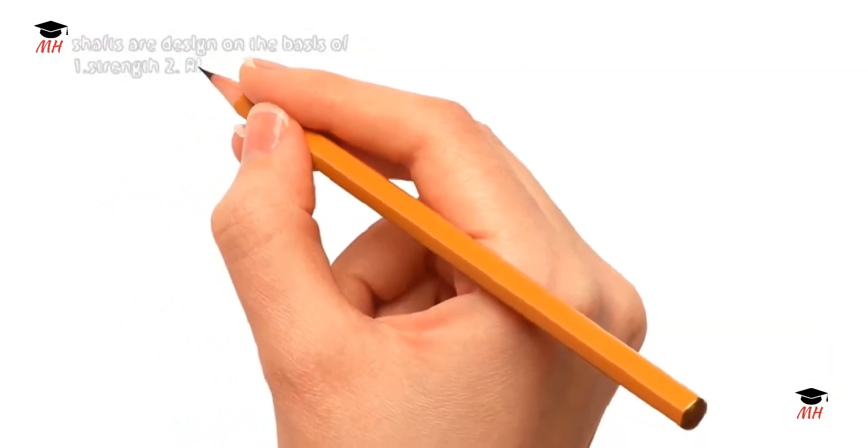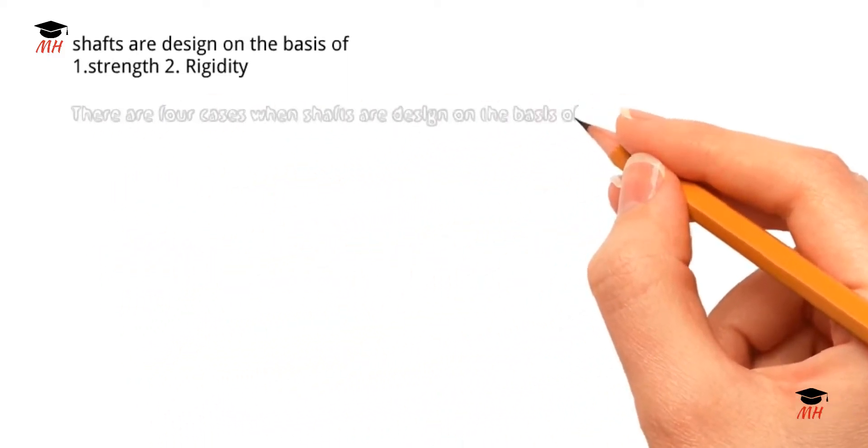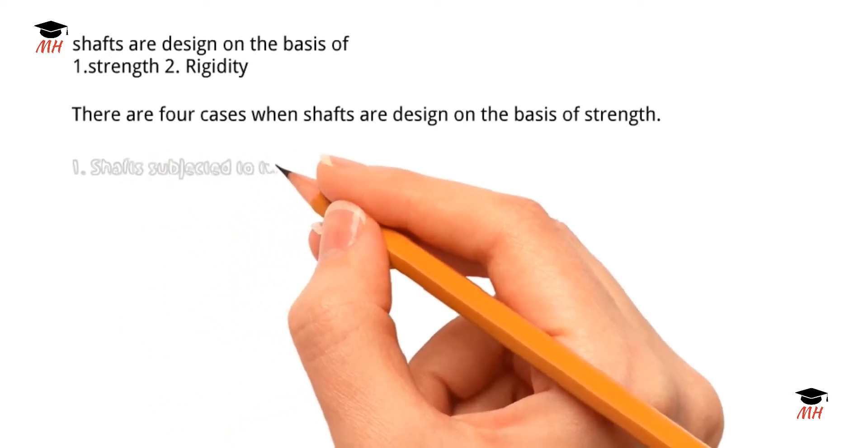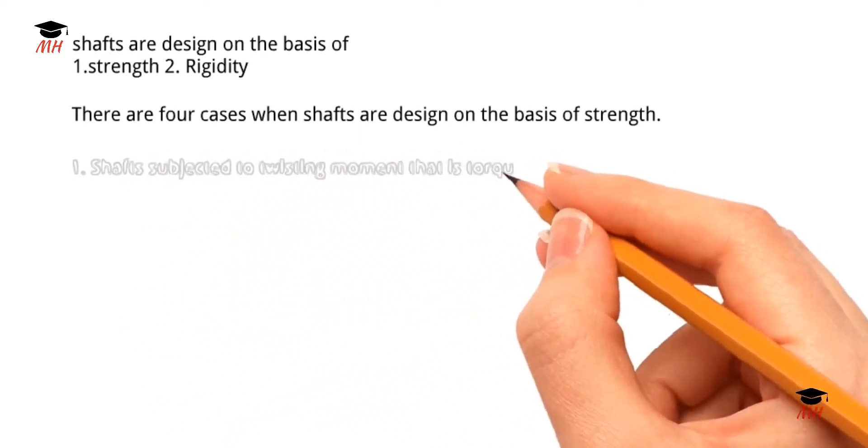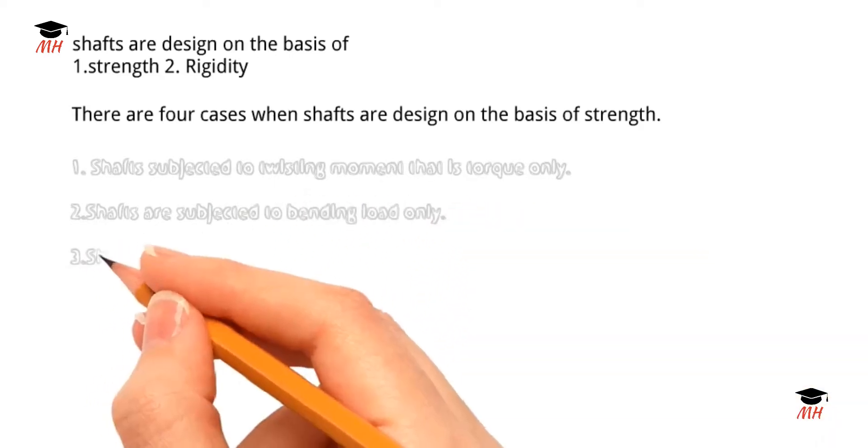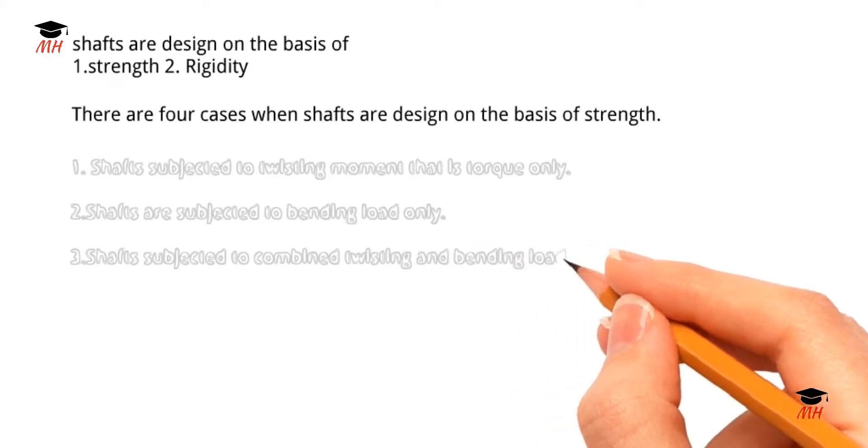Shafts can be designed on the basis of two criteria: strength and rigidity. There are four cases when shafts are designed based on strength. First, shafts subjected to twisting moment only. Second, shafts subjected to bending load only. Third, shafts subjected to combined twisting and bending loading.